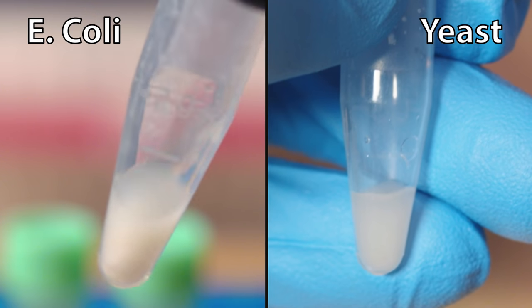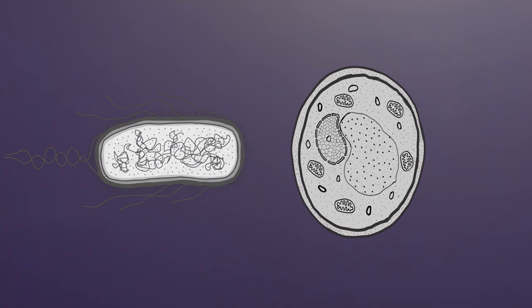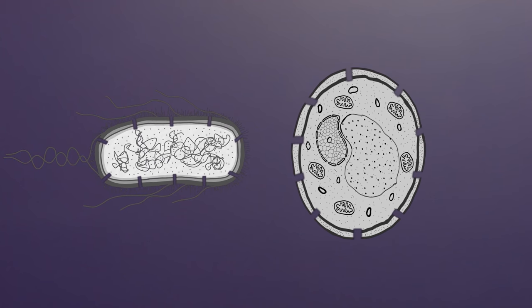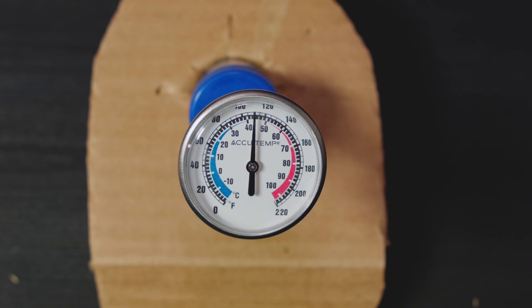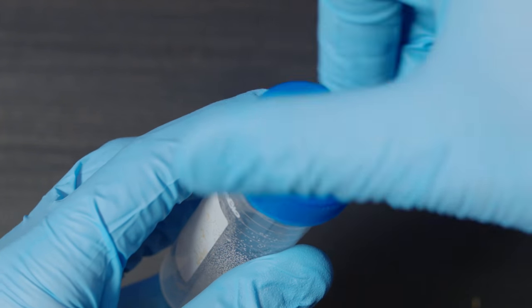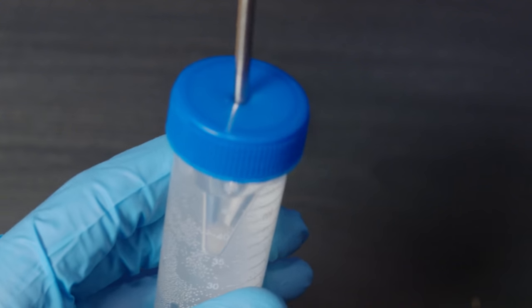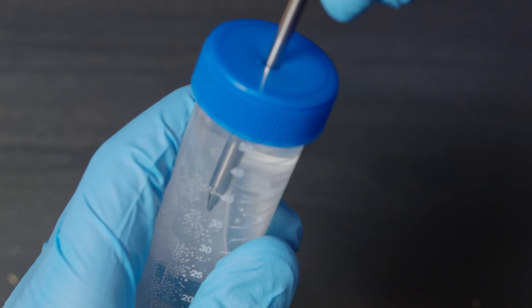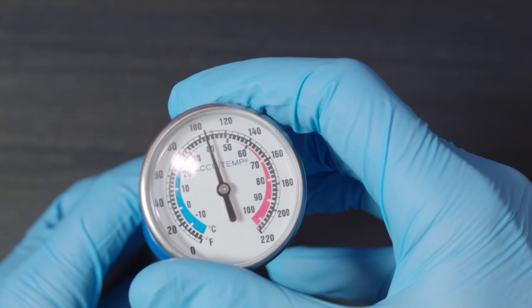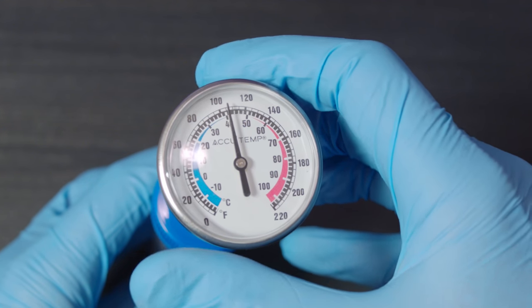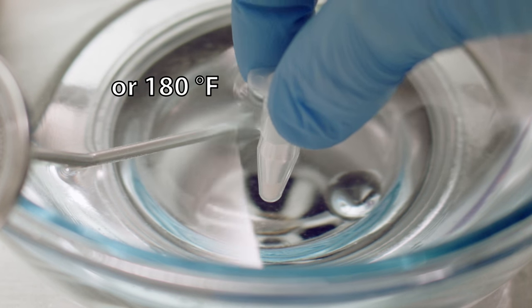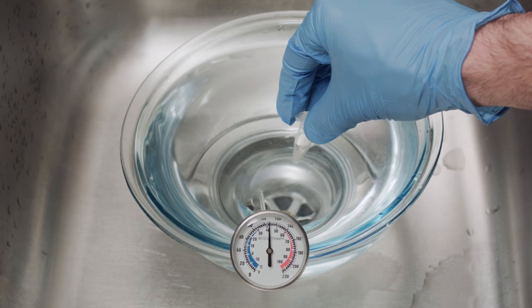Both of the competent cell mixes will now go through heat shock, which is another part of the transformation process to make the cell walls more permeable. The yeast will undergo its heat shock for 1 hour in 42 degrees Celsius water. I improvised my own method with one of the measuring tubes provided and a meat thermometer to prevent it from cooling down too quickly. I occasionally put this tube into some hotter water when needed when the temperature dipped too much. The E. coli only needs 30 seconds in 42 degree water so I just used a bowl.